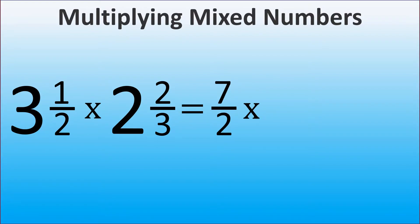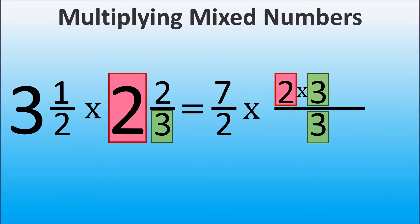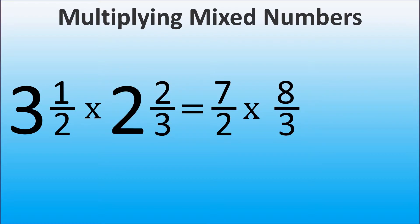Let's do the same with 2 and 2 over 3. We have 2 wholes and we can represent each whole as 3 over 3 because we have 3 in the denominator. Thus, we multiply 2 times 3, and then we have to add 2 to that because we initially had 2 in the numerator. 2 times 3 plus 2 is 8, so we have 8 over 3.